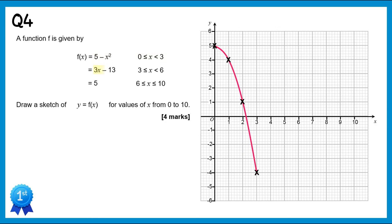Now we have 3x minus 13 for x values from 3 to 6. We already have the point for x=3. For x=4: 3 times 4 is 12, minus 13 gives -1, so (4, -1). For x=5: 15 minus 13 is 2, so (5, 2). For x=6: 18 minus 13 is 5, giving (6, 5). We join those up — it's a straight line.